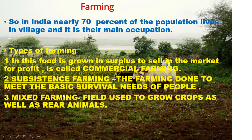There are three types of farming: commercial farming, subsistence farming, and mixed farming. In commercial farming, food is grown in surplus to sell in the market for profit. In subsistence farming, farming is done to meet the basic survival needs of the farmer and their family.